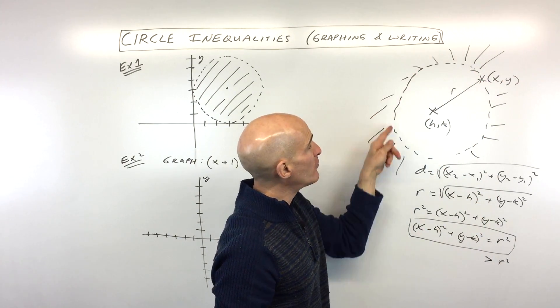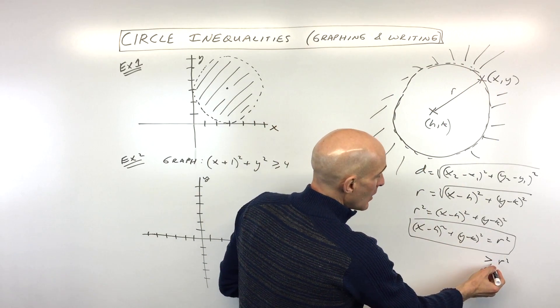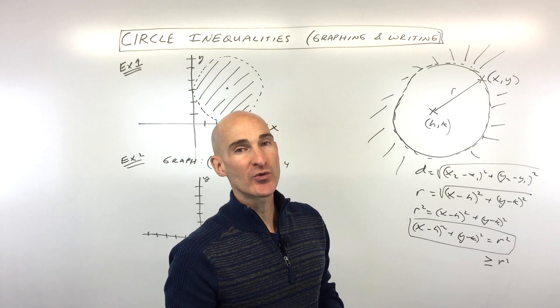Now what happens if I want to include the points on the circle? Say I want this to be like a solid line, meaning it's including all those data points. Well, then it would be greater than or equal to r squared.